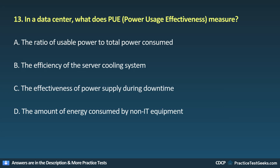Question 13. In a data center, what does PUE (power usage effectiveness) measure? A. The ratio of usable power to total power consumed. B. The efficiency of the server cooling system. C. The effectiveness of power supply during downtime. D. The amount of energy consumed by non-IT equipment.